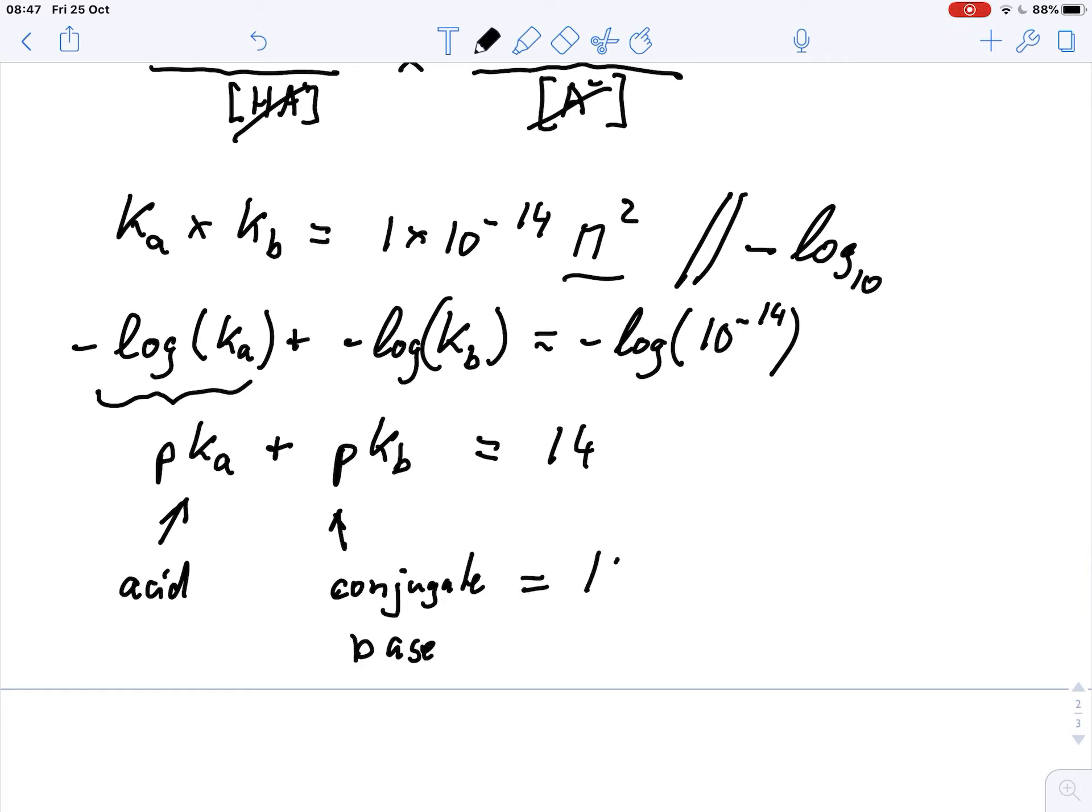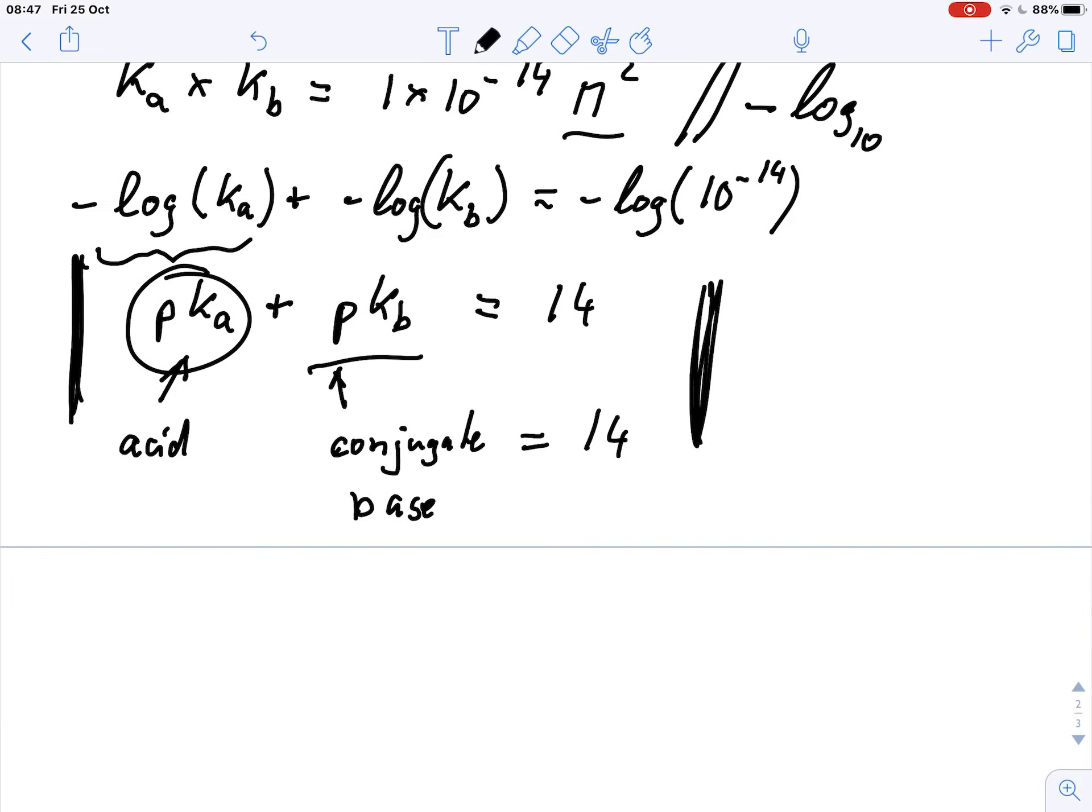is always 14. So if we know the pKa of an acid, with this relationship here, we can very easily figure out what is the pKb and vice versa.